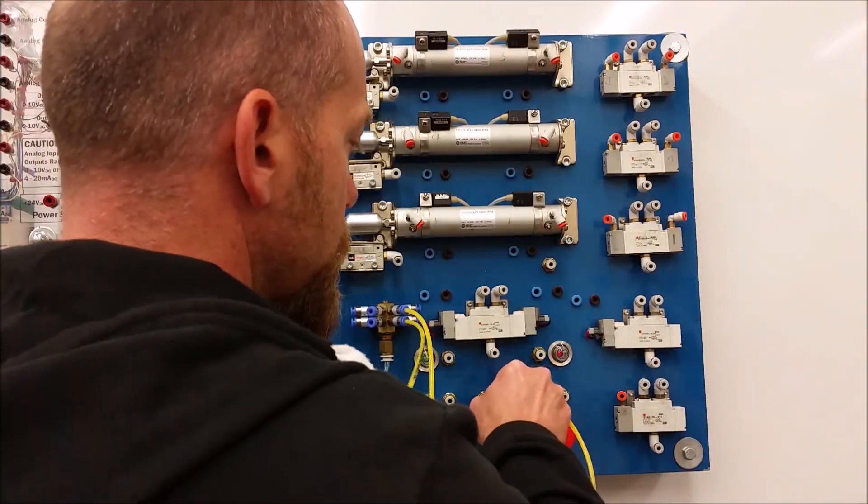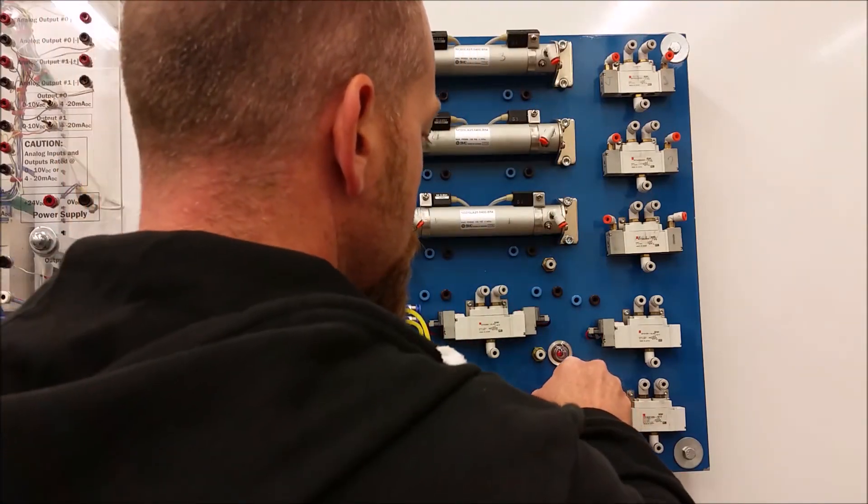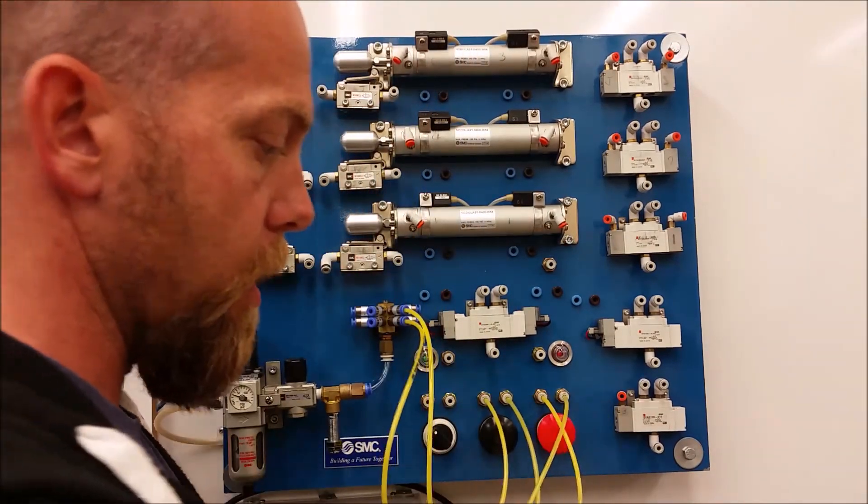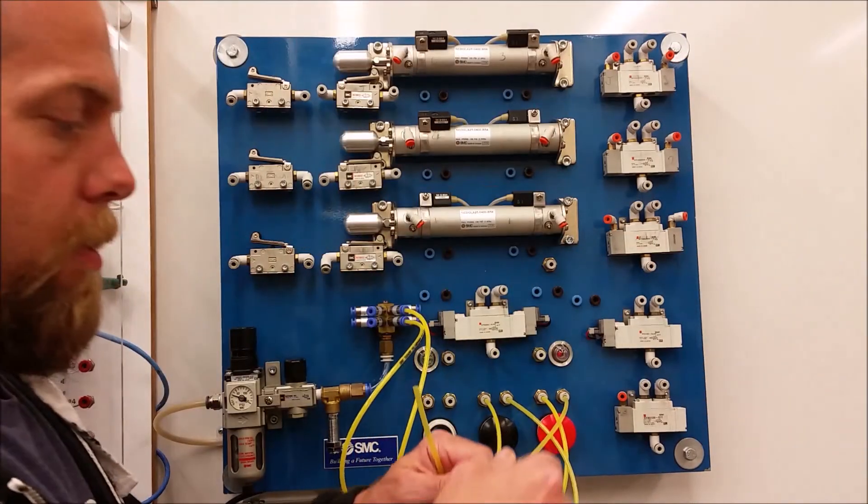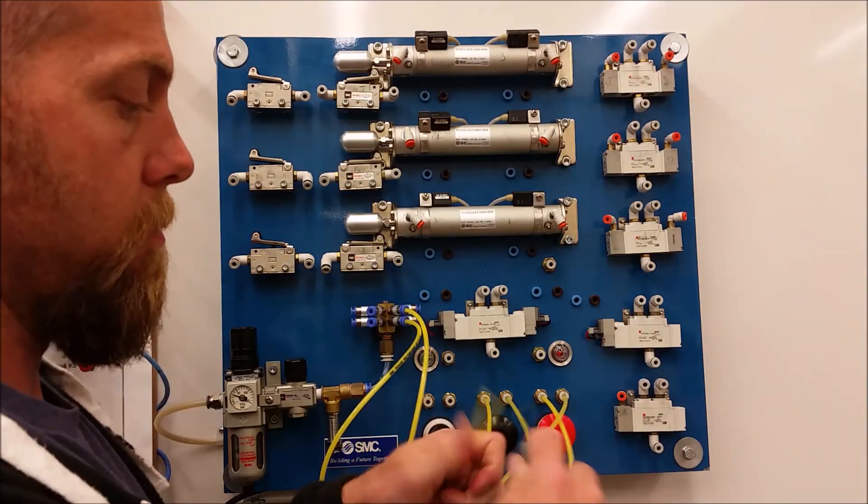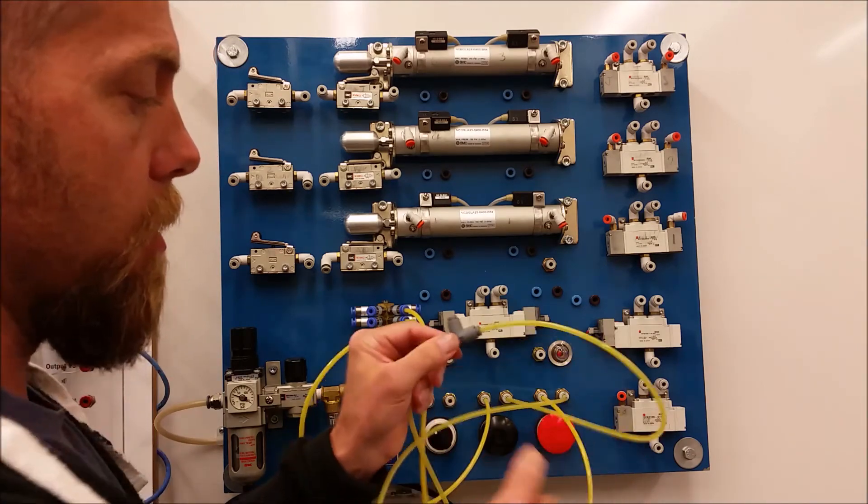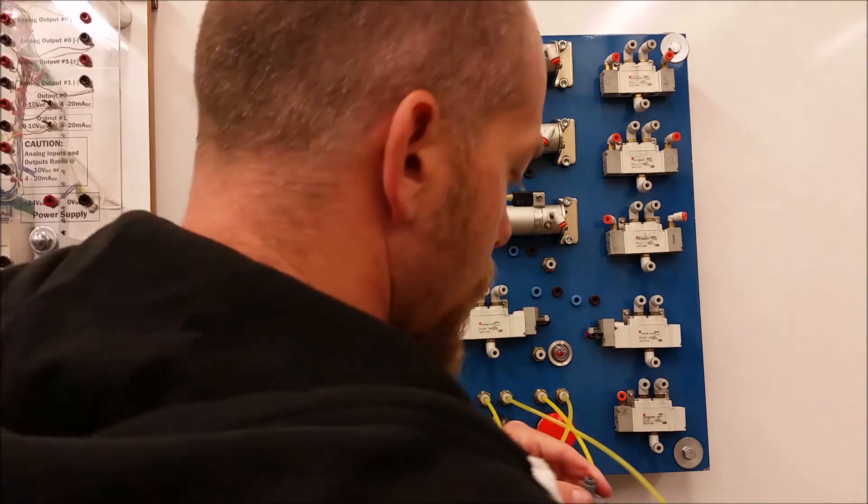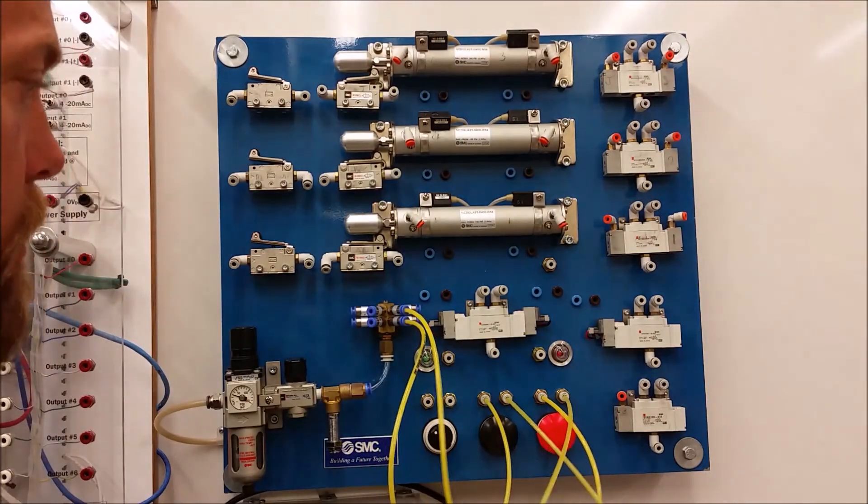And then we're going to parallel the output there, so this output and this output are going to combine. Now to combine those, let's grab a T from our top of the box here. Okay, so we've got the air coming into our T, and then from there we're going to output to our single acting cylinder. Okay, excellent.